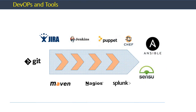DevOps is also synonymous with the many tools used in software delivery and deployment, because a key tenant of DevOps has to do with the automation of the various pipelines that integrate software development, testing, deployment, production, and monitoring. We will cover some of these tools and their functionality a little later in this presentation.